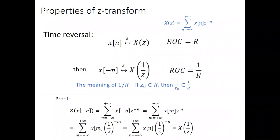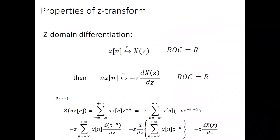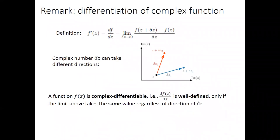Time reversal property — we've shown the proof, so I'll skip it. For Z-domain differentiation, I'll also skip the proof. But last lecture, there was one remaining question: what do we mean by differentiation of a complex number? We know that if we're looking at a function of a real number, its differentiation is well defined. So what if the differentiation is over a complex number? Here is an explanation.